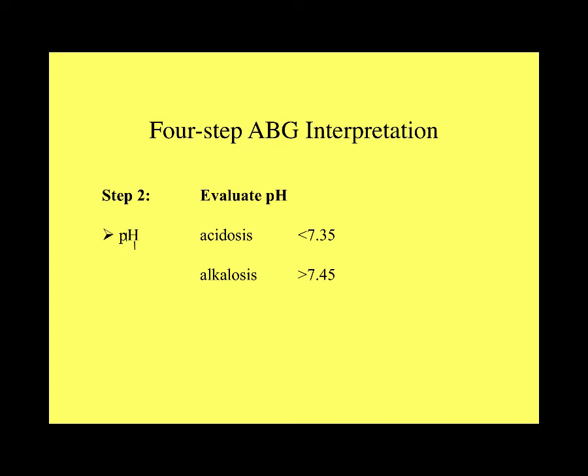Step 2: Look at the pH. It will either be normal, below normal (acidosis), or above normal (alkalosis). Once you've determined whether there's an acidosis or alkalosis, the next step is to find out why — connected to the respiratory and metabolic components.